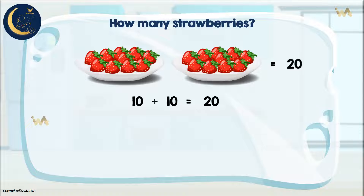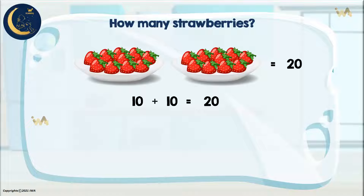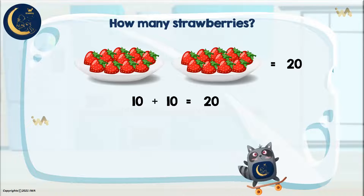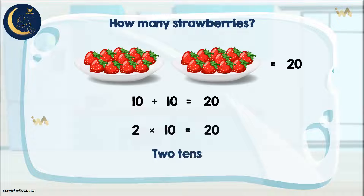So we have twenty strawberries. Now let us write the multiplication sentence that expresses the number of strawberries. We write the number of groups multiplied by the number of items in one group. How many groups do we have? Two. How many items in one group? Ten. So we have two multiplied by ten equals twenty. It is also read as two tens. Let's read together: two multiplied by ten equals twenty.